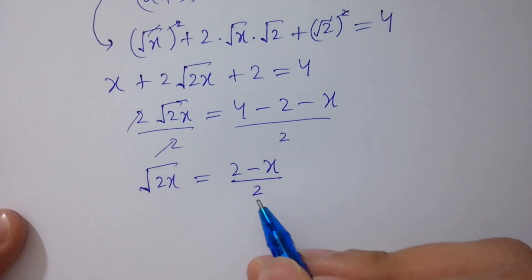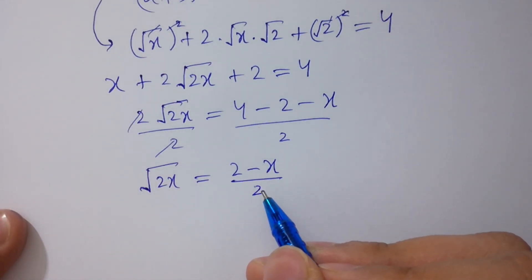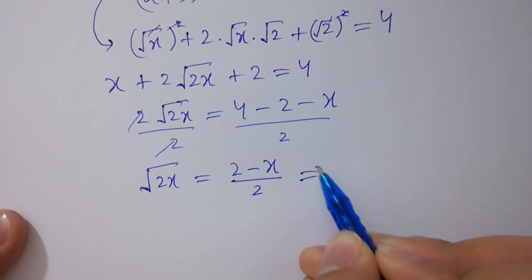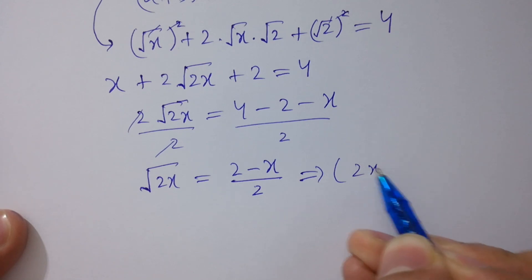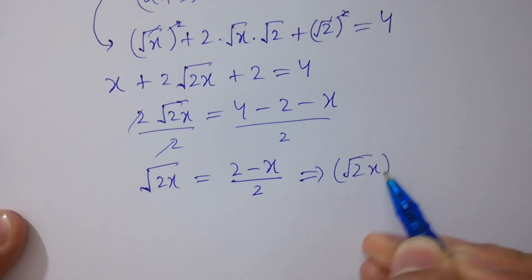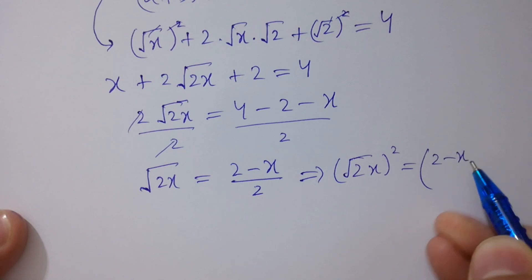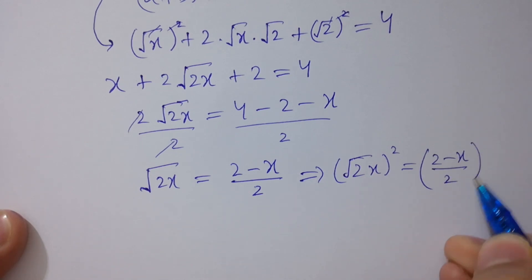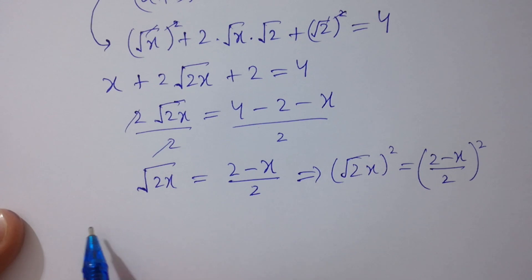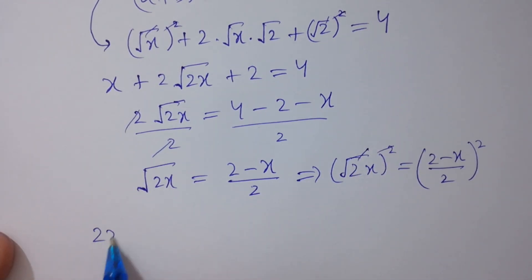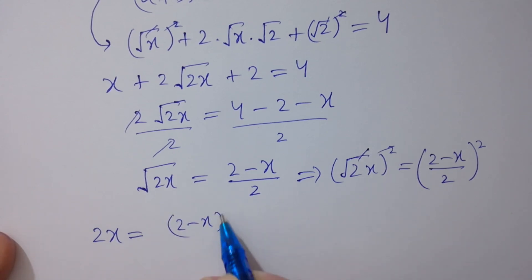In the next step, again take square on both sides. The square cancels from square root of x. We have 2x equals 2 minus x squared over 2 squared.